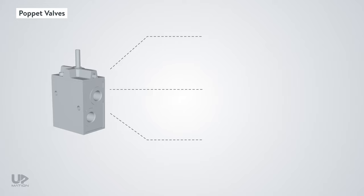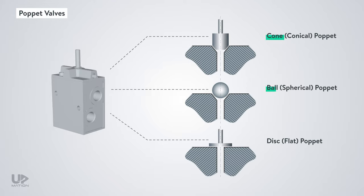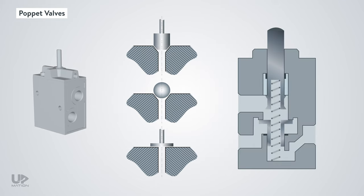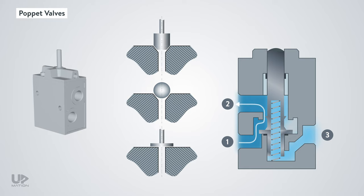Poppet valves have different types depending on the type of closing element that has been used in them. For instance, this is a simplified cross-section of a disc poppet valve. When the valve is unactuated, the flow is from 2 toward 3. And when the valve gets actuated, the valve sits on the disc and the path from 1 toward 2 gets open.